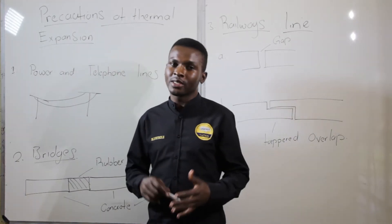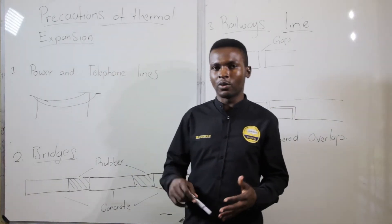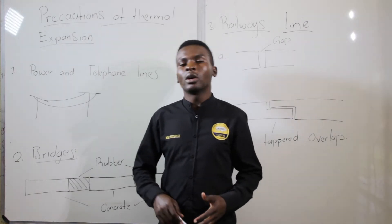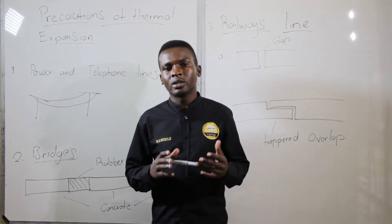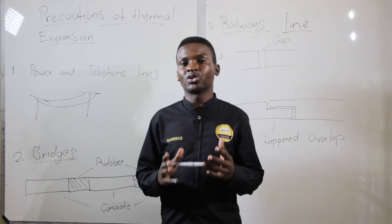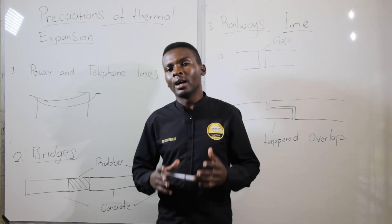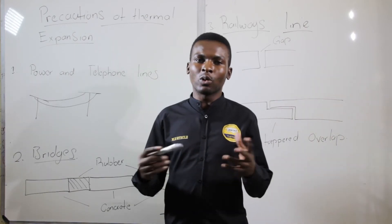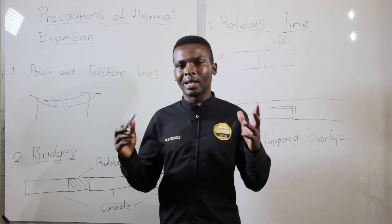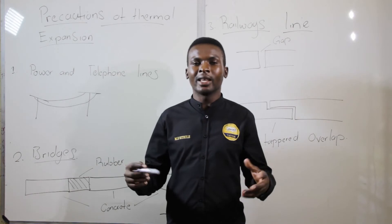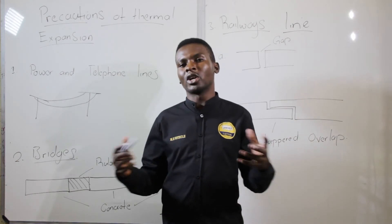The first example is going to be on power and telephone lines. When telephone or power lines are constructed, there is an allowance that is left for expansion and contraction.